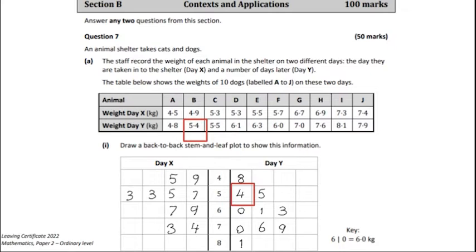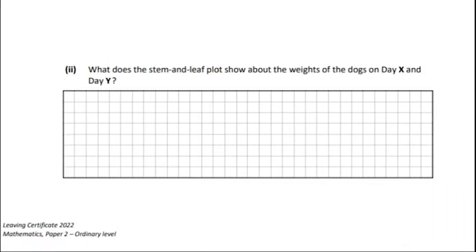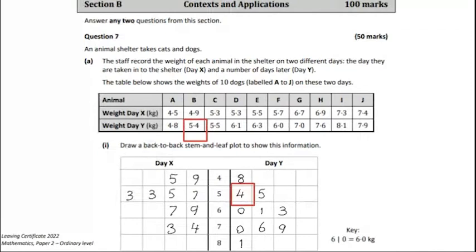Let's go on to the next part. So what does the stem and leaf plot show about the weights of the dogs in day X and day Y? All right, so let's have a quick look at it. Well we can see here that day X values are on the lower side. We don't have a value in the 80 kg but in day Y we have an 81 kg.